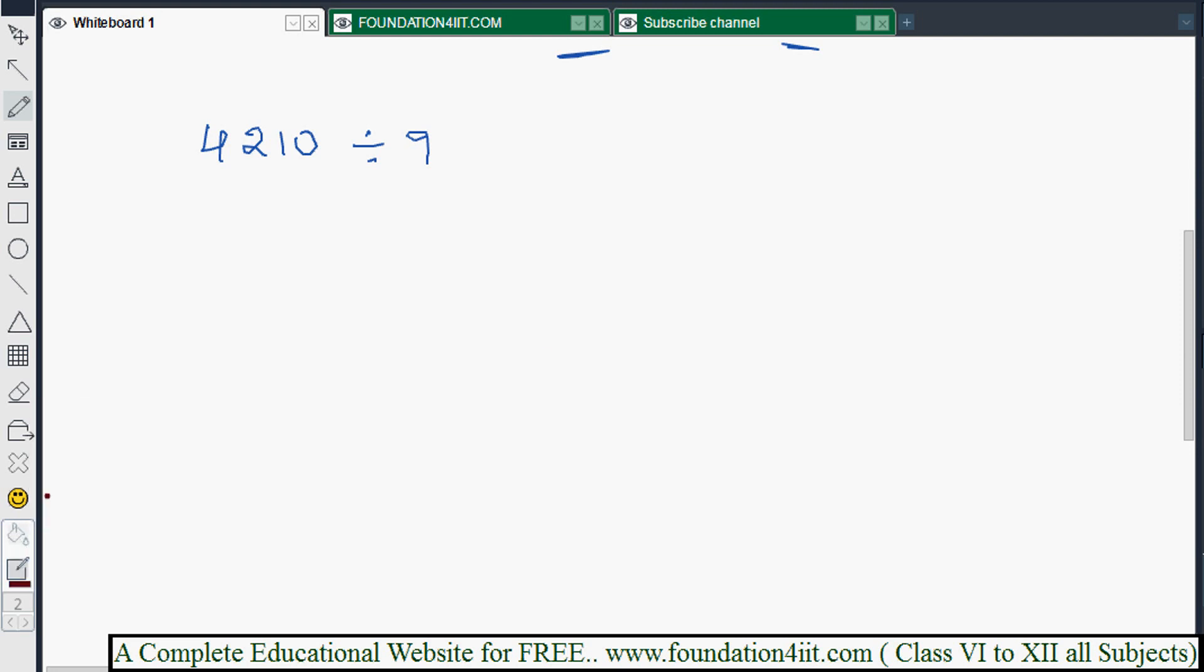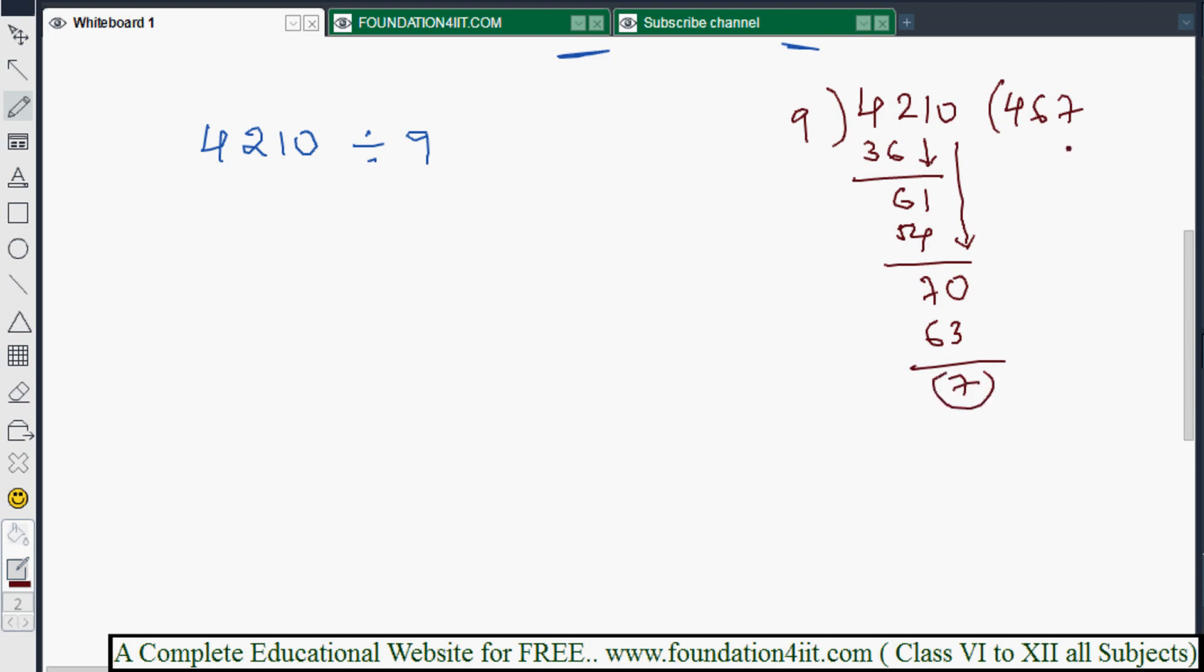Let me explain with one more example: 4,210 divided by 9. First, check it with the normal method. 42 divided by 9. 9 times 4 is 36, leaving 6. Bring down the next number, which is 1. 9 times 6 is 54. Subtract to get 7.